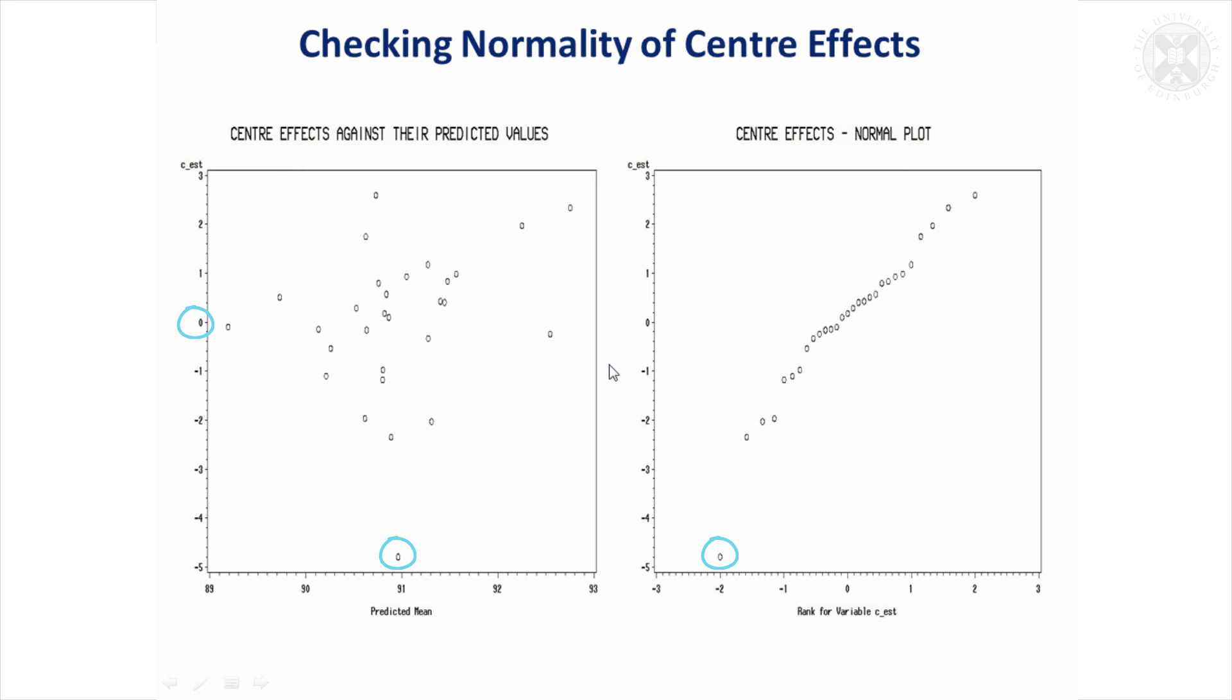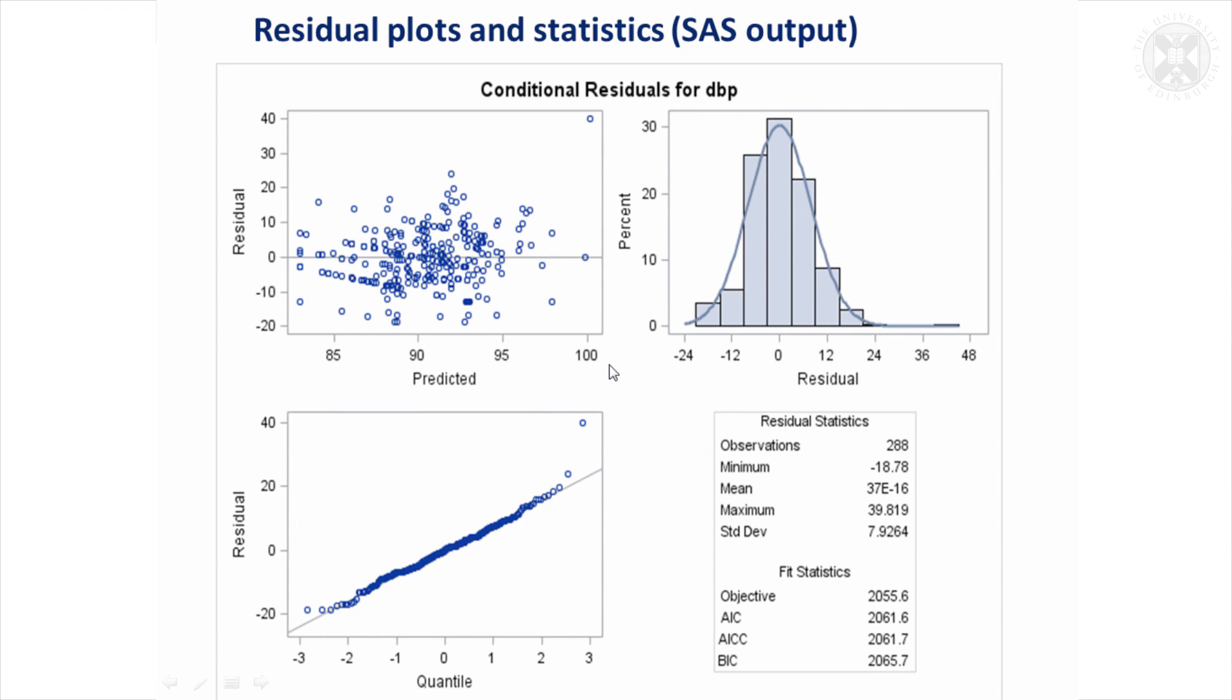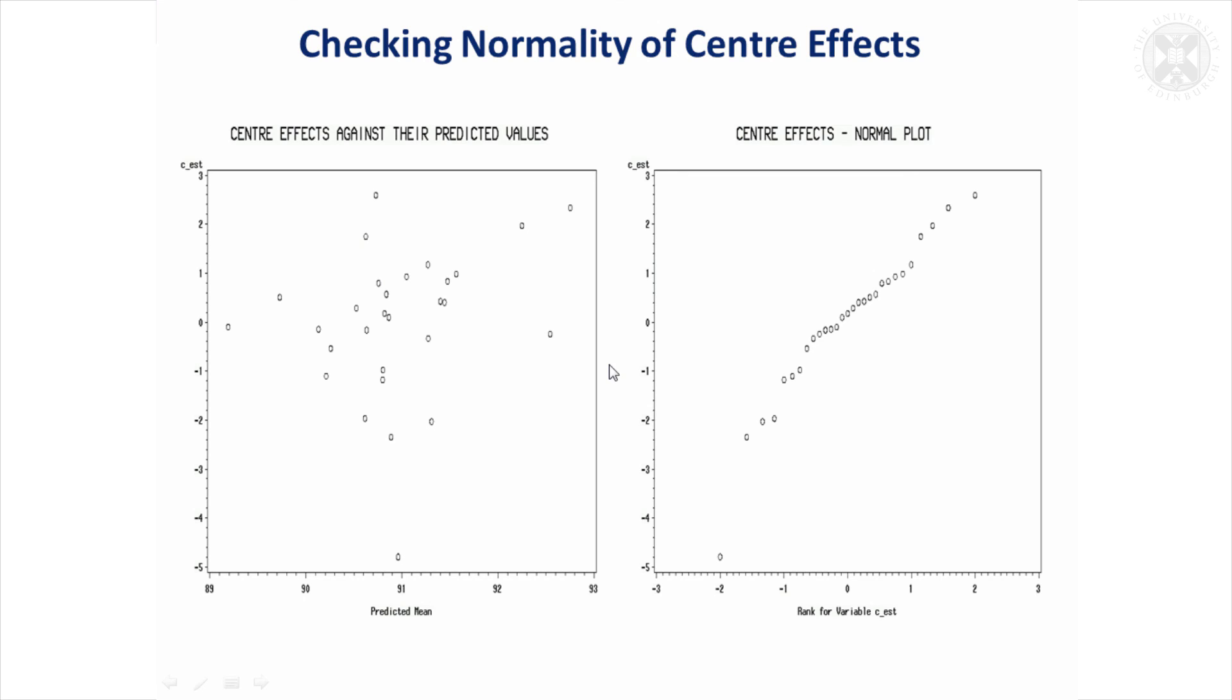So we'd want to investigate that center to see if there's anything odd about it, whether that center could be excluded or if not try analyzing the data, excluding it and comparing the results to keeping it in. And certainly when I did look at this then the effect of taking out just that one residual made a big difference to the results so it was quite important to check the model assumptions.